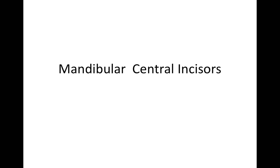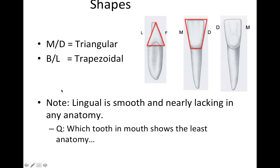This lecture is going to be on the mandibular central incisors. As far as shape is concerned, from a mesial-distal view it's going to be triangular, and from a buccal-lingual view it's going to be trapezoidal.